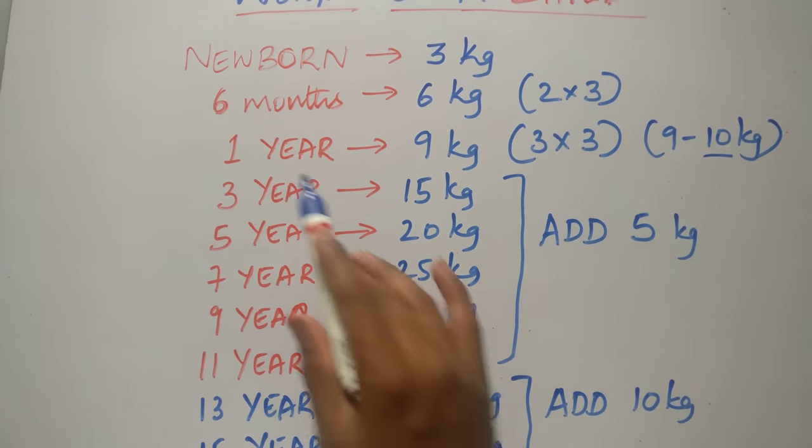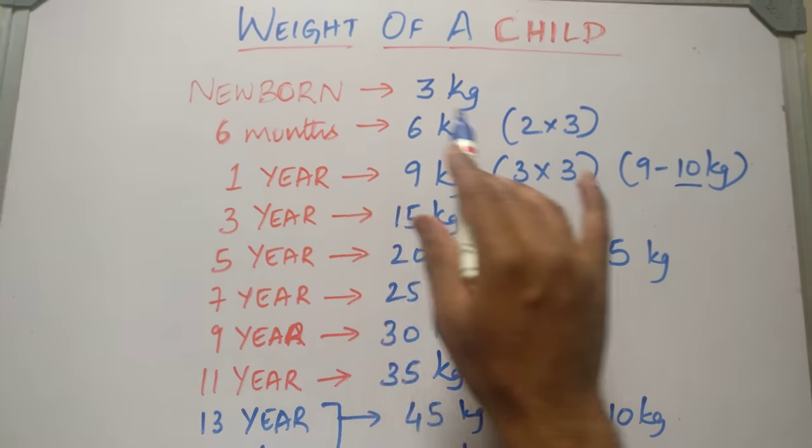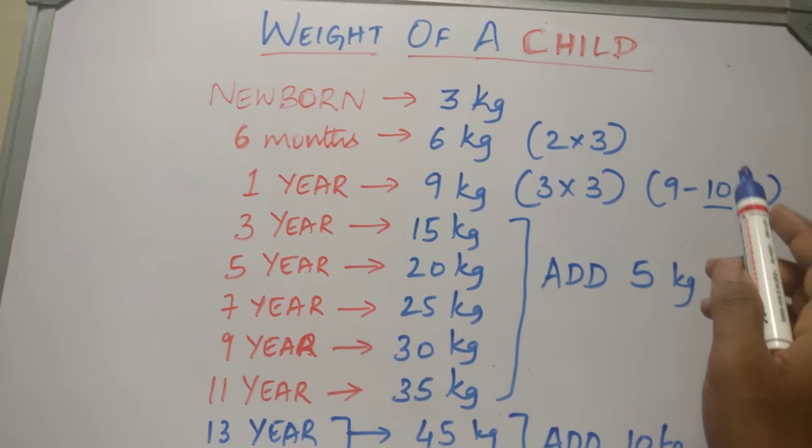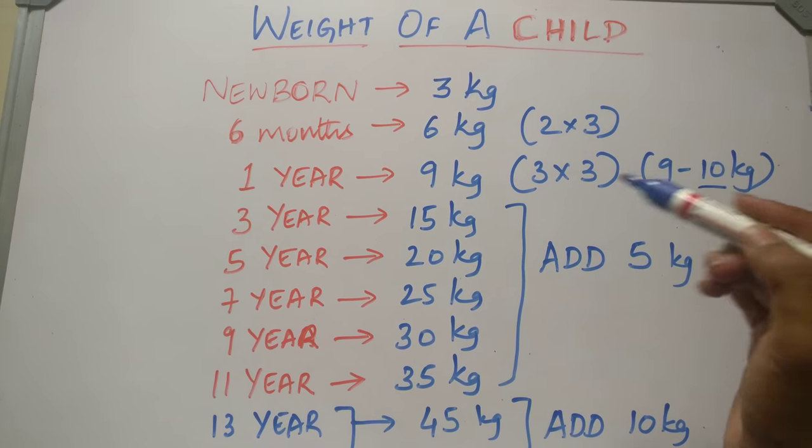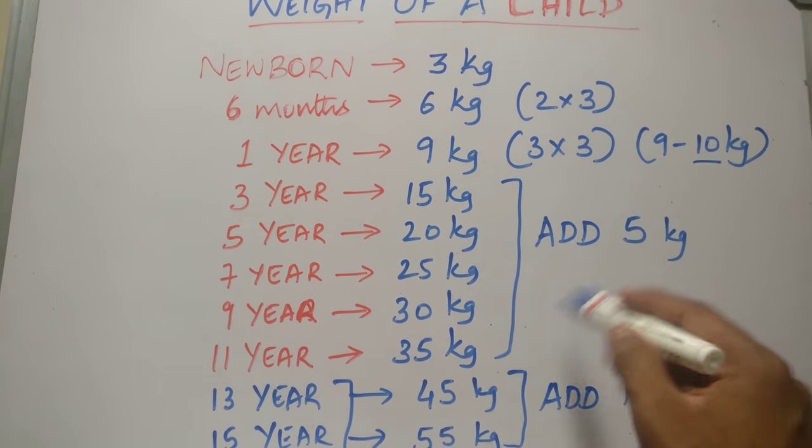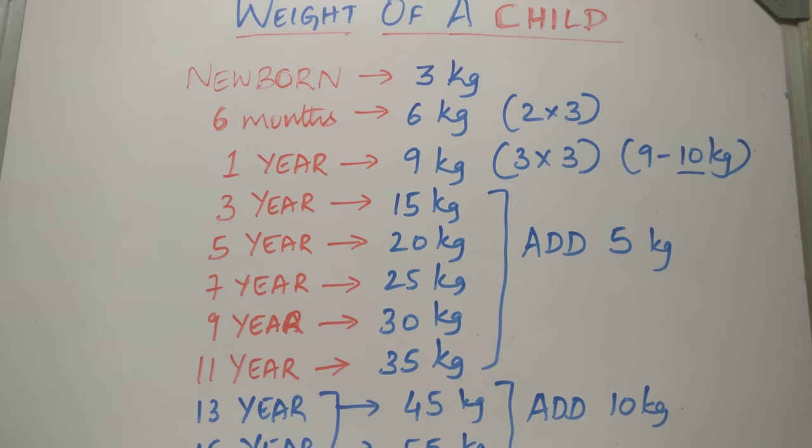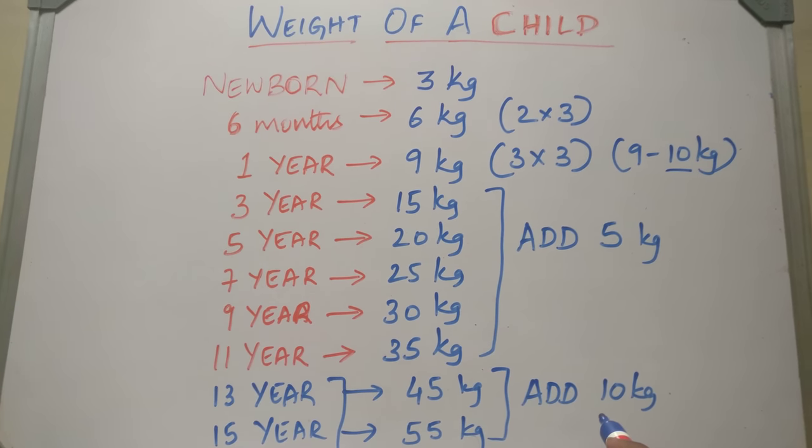Therefore, starting from newborn, the newborn weight is 3 kgs. Doubles at 6 months of age. Triples at 1 year of age. We are taking the weight at 1 year of age, it is 9 to 10 kgs. From 1 year to 11 years of age, you will add 5 for every odd years of age. And after 11 years of age, for every odd years of age, you will add 10 kgs. That is up to 15 years of age.